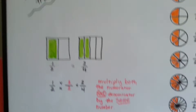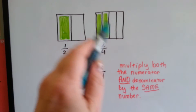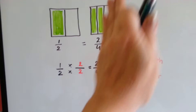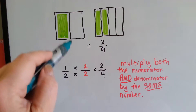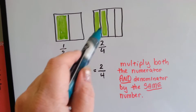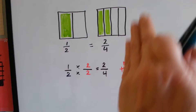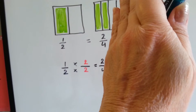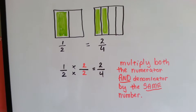We're talking about equivalent fractions. I want to show you something really cool. If we've got two squares that are exactly the same size and we color them in — where this one is half because it's split into two parts, and this one is two-fourths because it's split into four parts and two parts are colored — they are actually the same size. Two-fourths is equal to one-half. Half of the squares are colored in green on both of them.